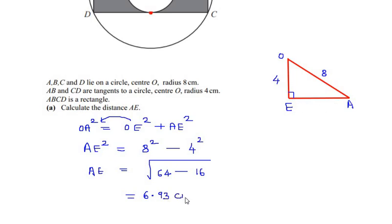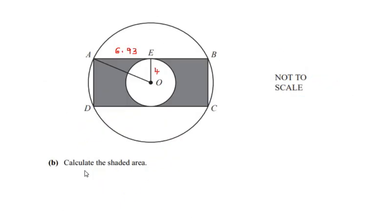Now let us look at the next part: calculate the shaded area. To find the shaded region, we subtract the area of the circle from the area of the rectangle. To find the rectangle's area, we need its length and width.